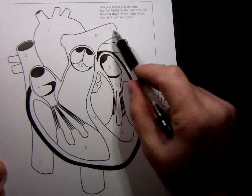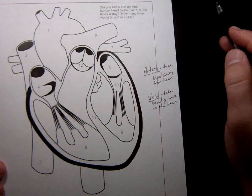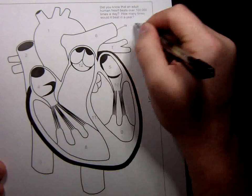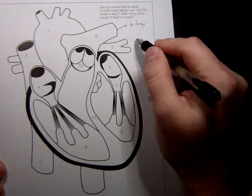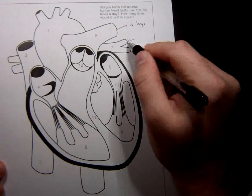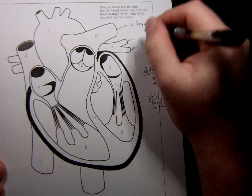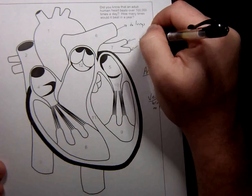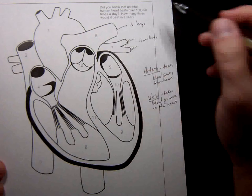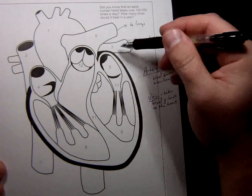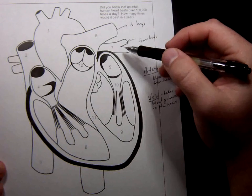So this is an artery because it's taking blood away from the heart. Where did I say it's going? To the lungs. And then these vessels here are taking blood back from the lungs. Since it's going back to the heart, these are veins. Because lungs are involved, these two earn the name pulmonary. So this is the pulmonary artery. These are pulmonary veins.